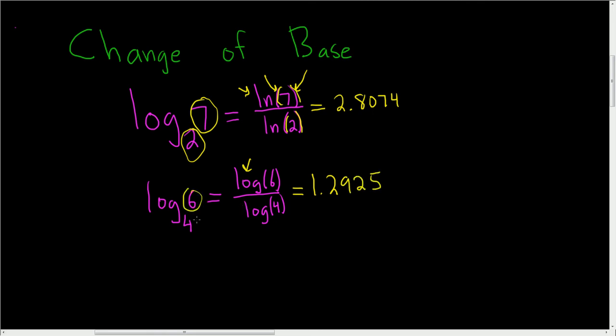So again, it's just the log of this one divided by the log of this one. Just to make the point, for this first one here, we could have done log base 2 of 7 is equal to log of 7 over log of 2. And you still get the same answer, 2.8074.